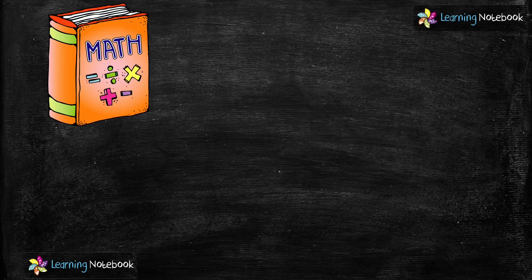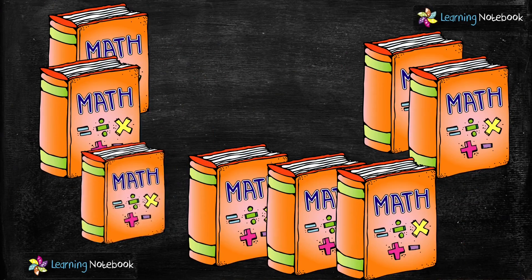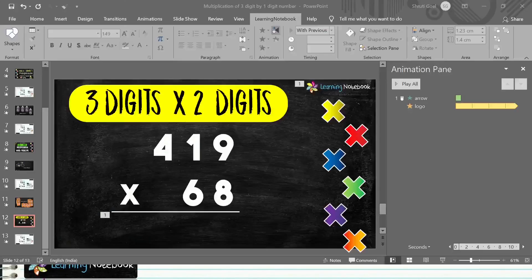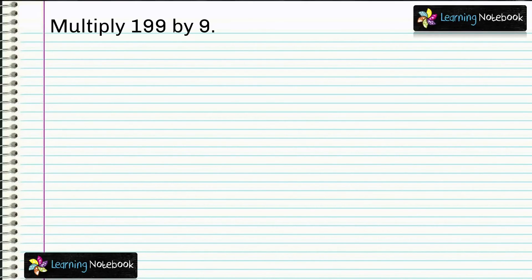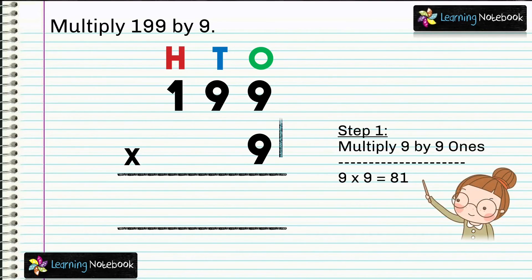Now the last question is: if a book has 199 pages, so how many pages do 9 such books have? Again students, this is the case of multiplication. Here we will multiply 199 by 9. So let's multiply these two numbers by first writing them in column form. In the first step, we will multiply 9 by 9 which equals to 81. So carry 8 to the tenths place and write 1 in the answer.